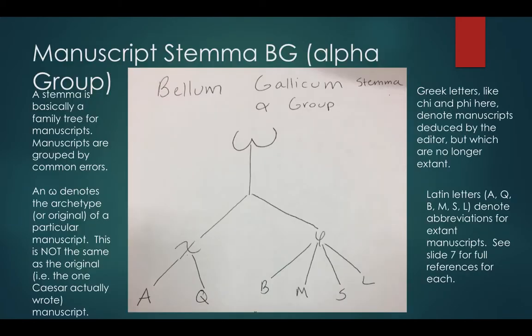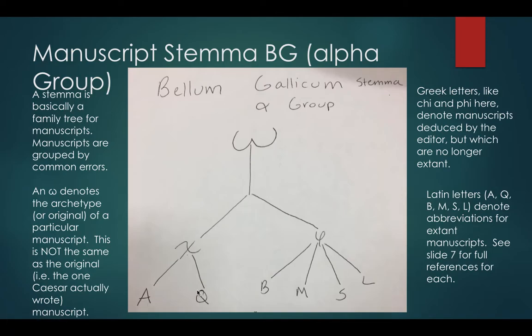From there, we try to figure out how they're related to the archetype, which is the original manuscript for this family tree, but it's not the original manuscript that Caesar wrote — that would require going farther back. You're already dealing with a couple of levels of supposition here, because all the Greek letters — omega, xi, and phi — are manuscripts that we don't have, but we logically deduce would have existed, based on how A and Q have similar mistakes in them. They might repeat or leave out certain words, or mess up endings, or other errors like that.